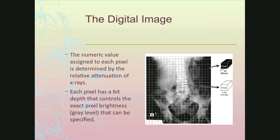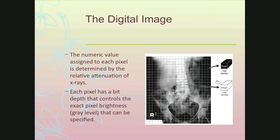When you look at the pixel in two dimensions, it has no depth. But when you pull it out and see there's depth to it, it's actually called a voxel, because each pixel represents a volume of tissue — so it's truly called a voxel because it has depth to it. We're imaging three-dimensional objects. The larger the matrix, the smaller the pixels, and there are more of those pixels.